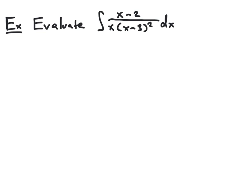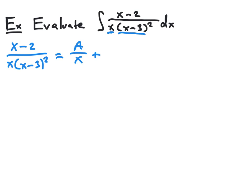In this example, we'd like to evaluate the integral of x minus 2 over x times x minus 3 squared. This denominator has two linear factors. We have the factor x, which is a non-repeated factor, and we have x minus 3 squared, which means it is repeated with an exponent of 2. So in order to find our partial fraction decomposition, we consider each factor separately. For the non-repeated linear factor x, we get a term a over x. For the repeated factor x minus 3 squared, we get two terms: a constant b over x minus 3 plus another constant c over x minus 3 squared. We stop after the second term because we've reached the exponent 2 that appears in the original denominator.